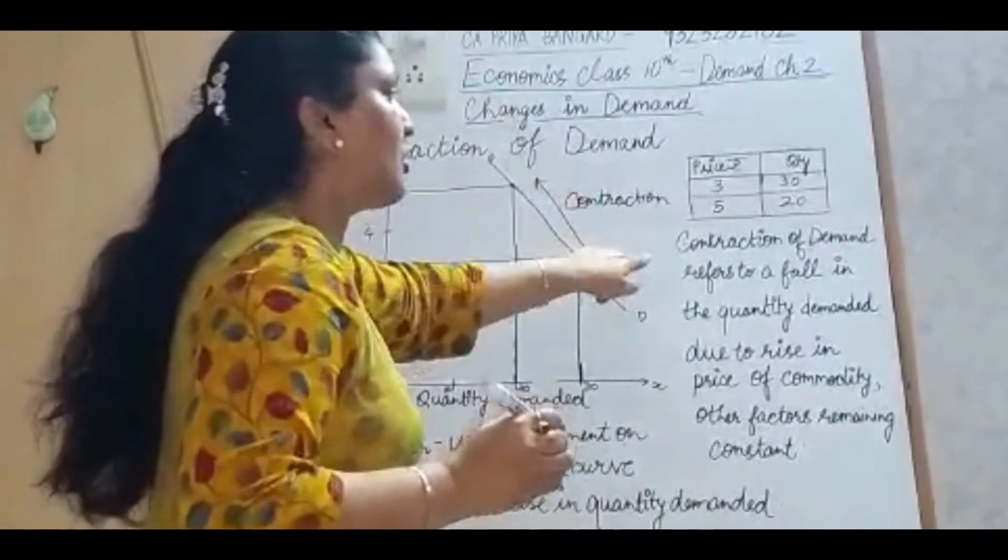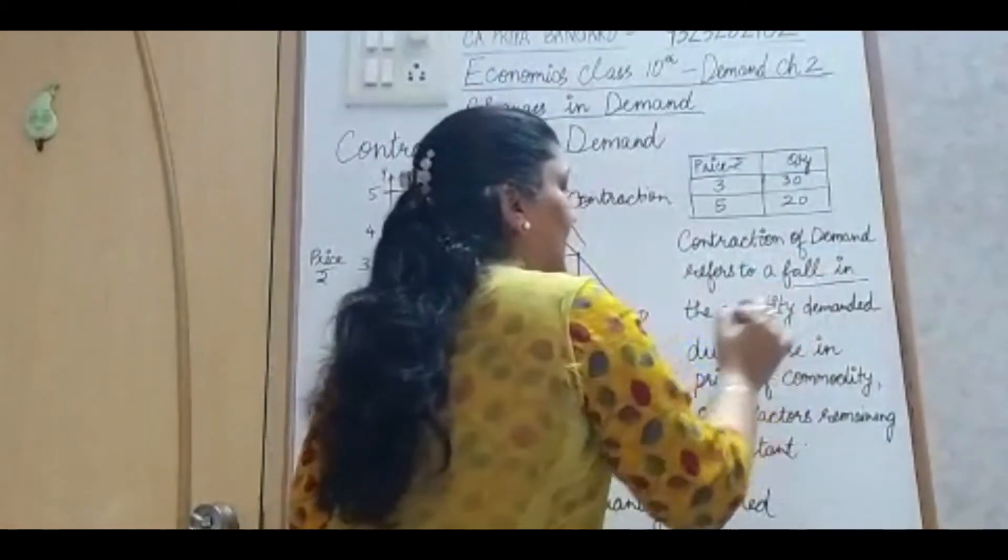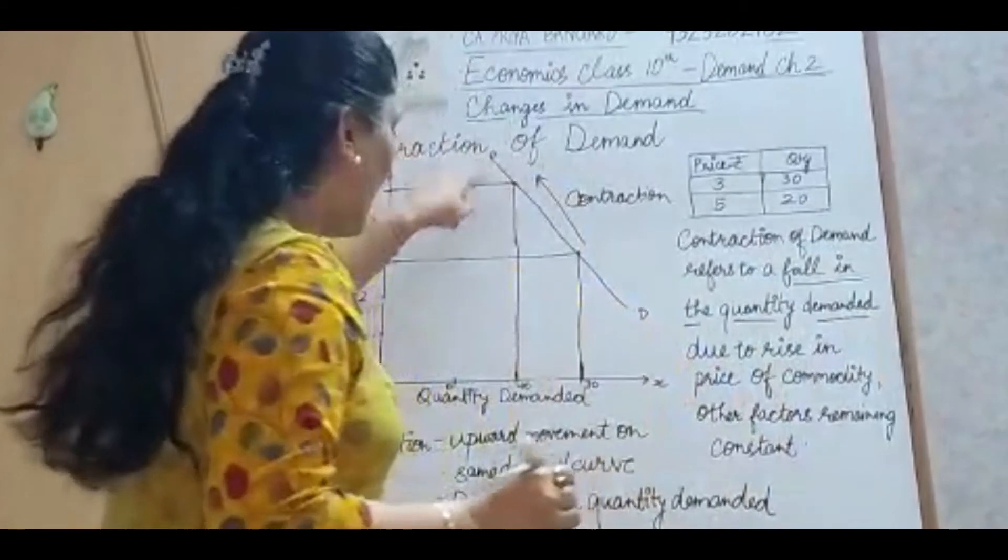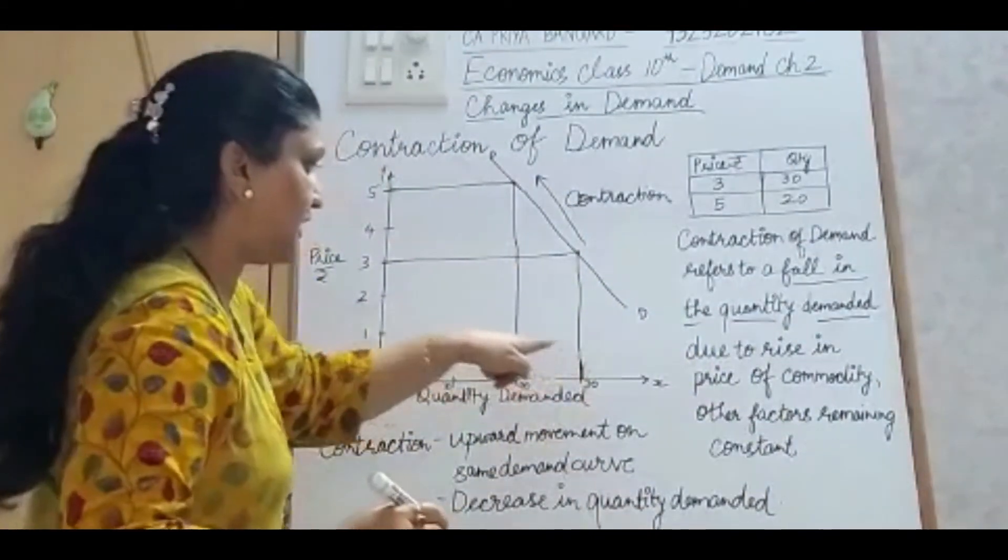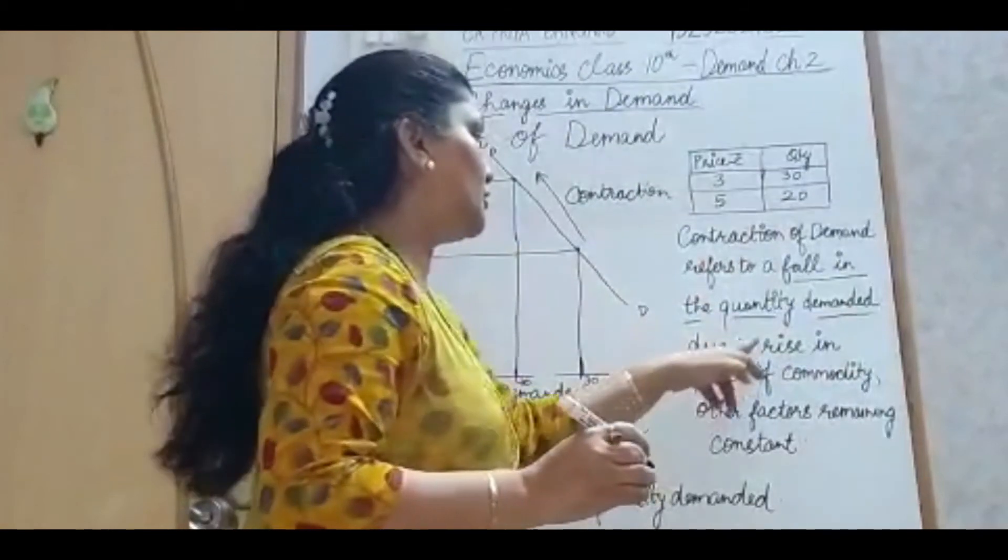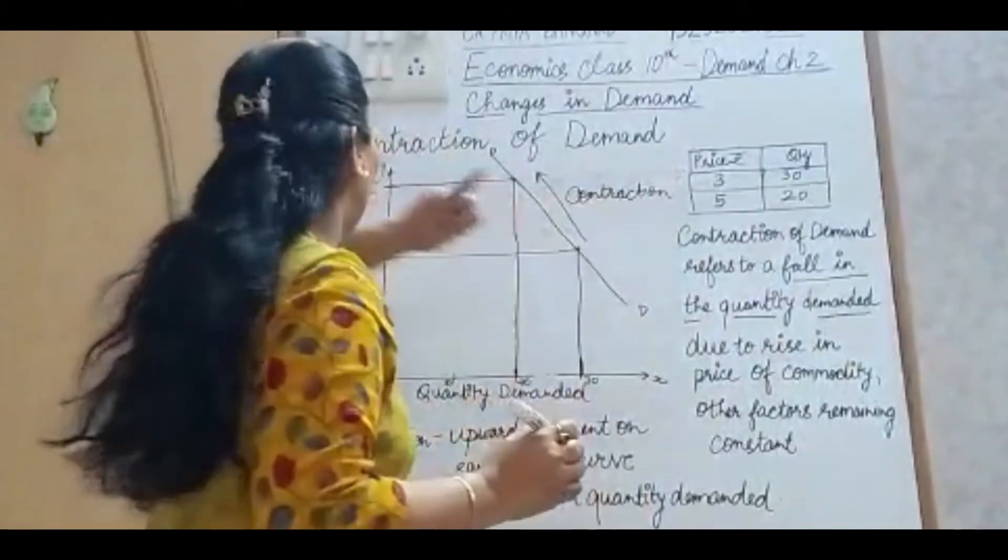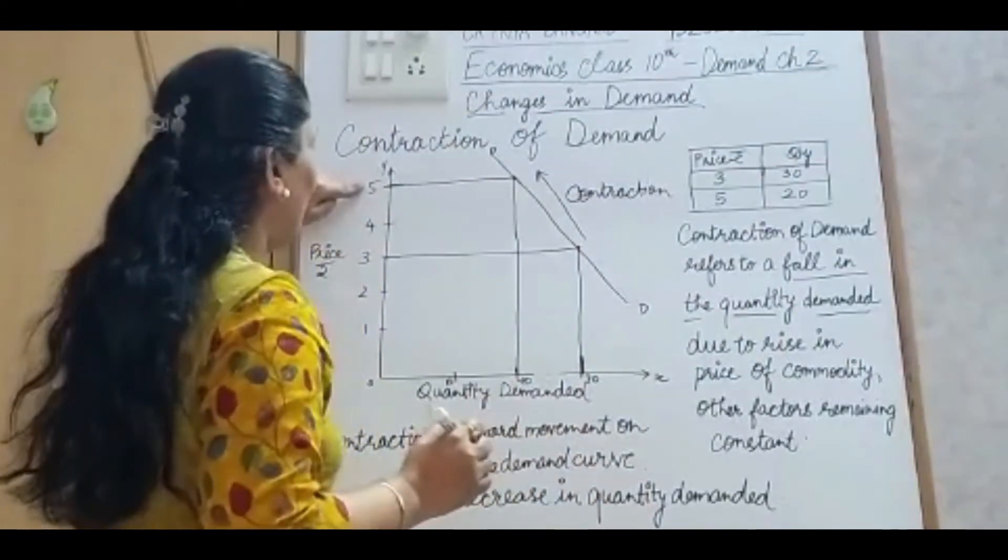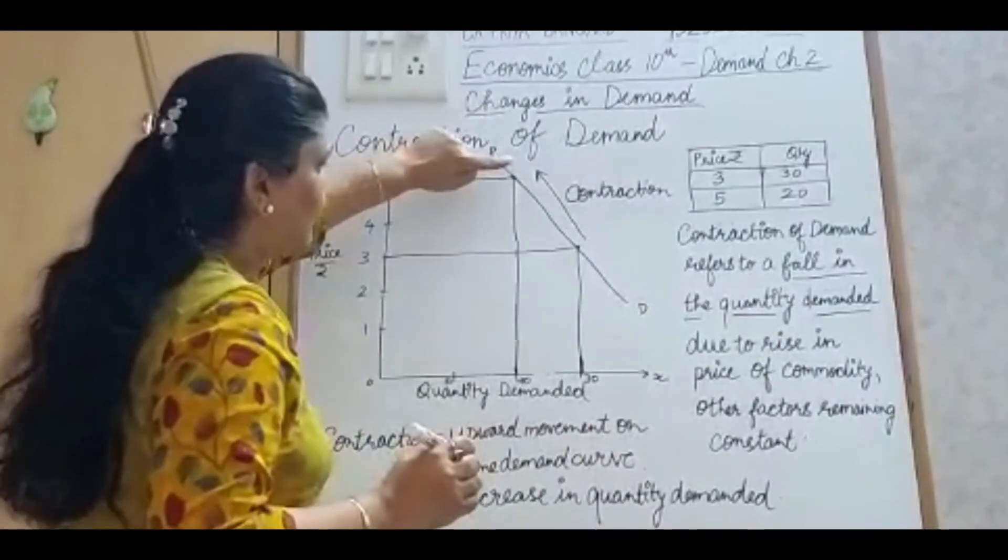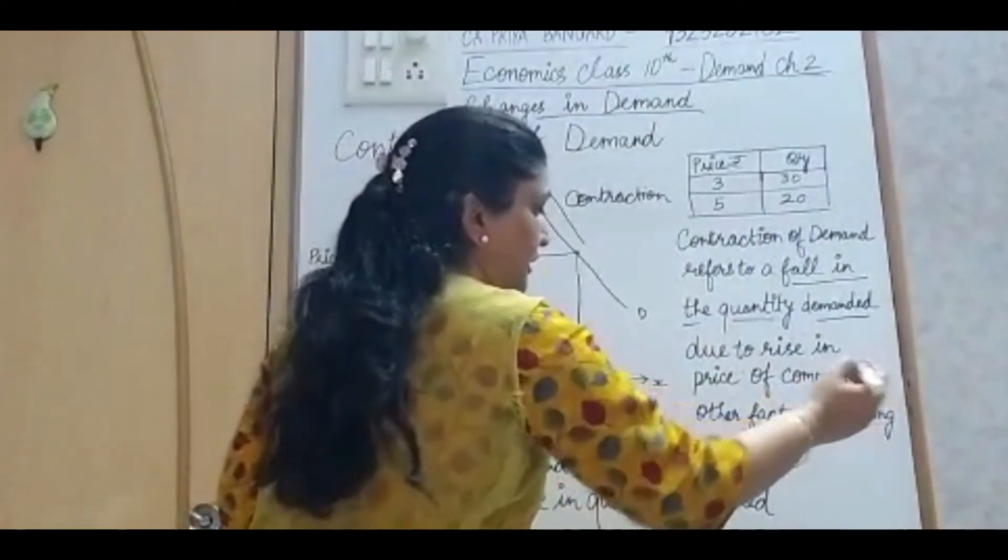So contraction of demand refers to a fall in the quantity demanded. Fall in the quantity demanded from 30, it became 20. Fall in the quantity demanded due to rise in price. Price has increased from 3 to 5. So due to increase in price, there is a fall in quantity demanded due to rise in price of the commodity.